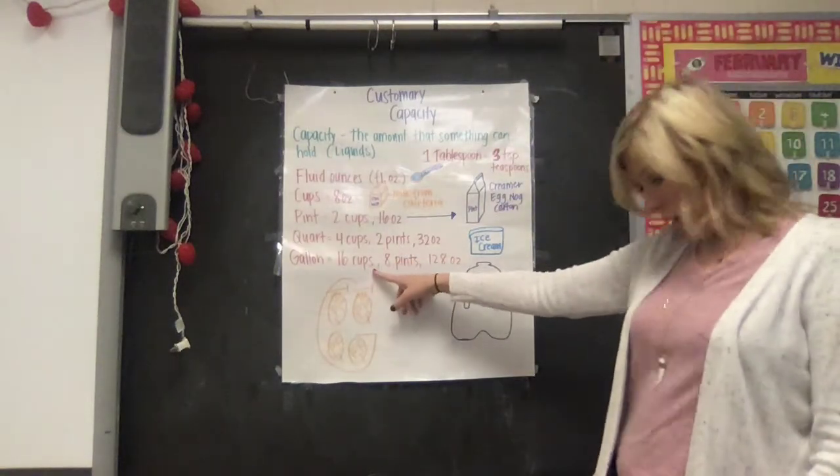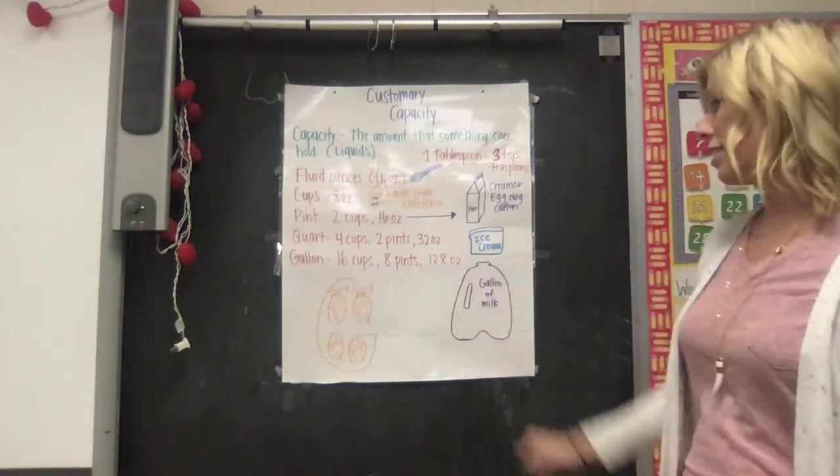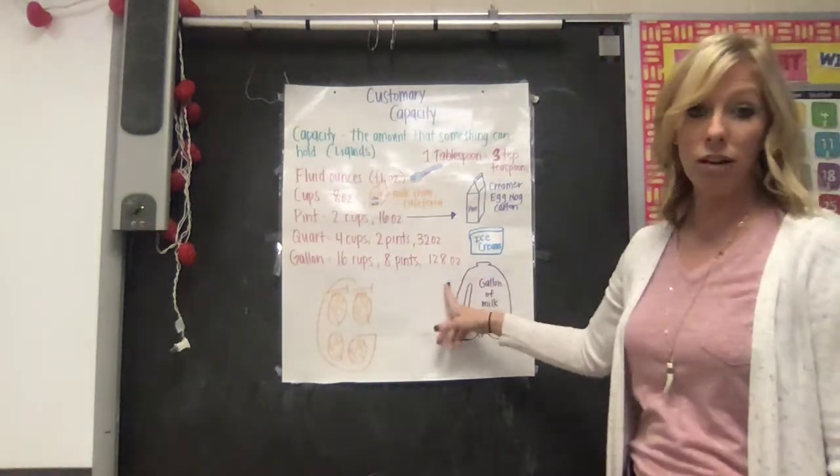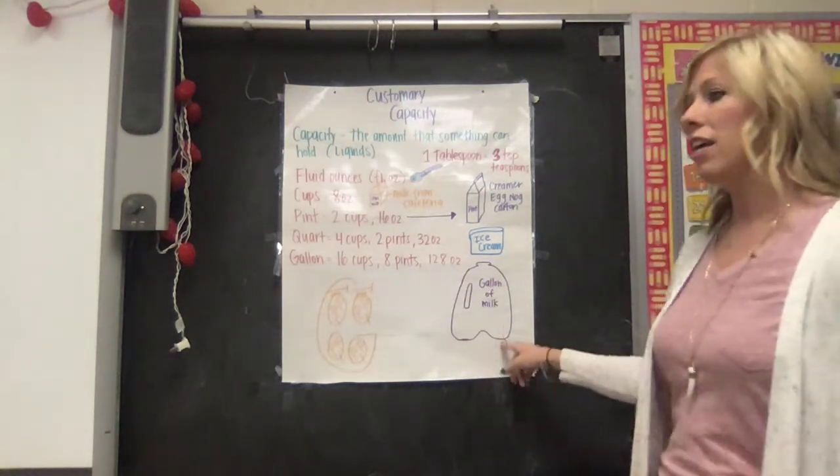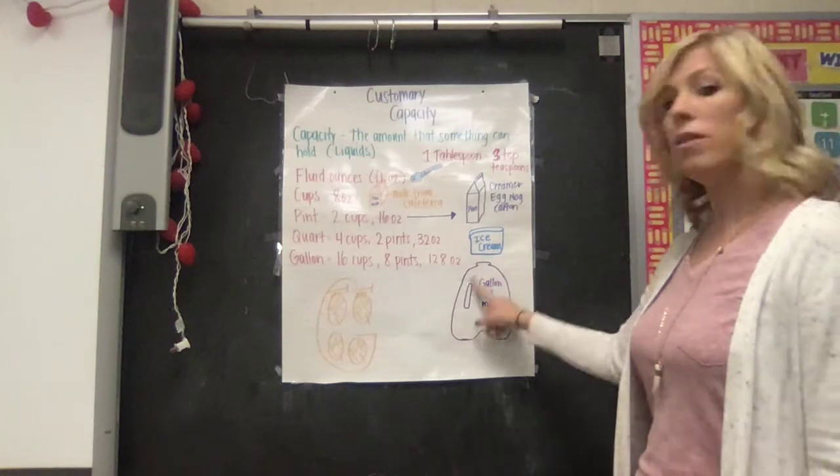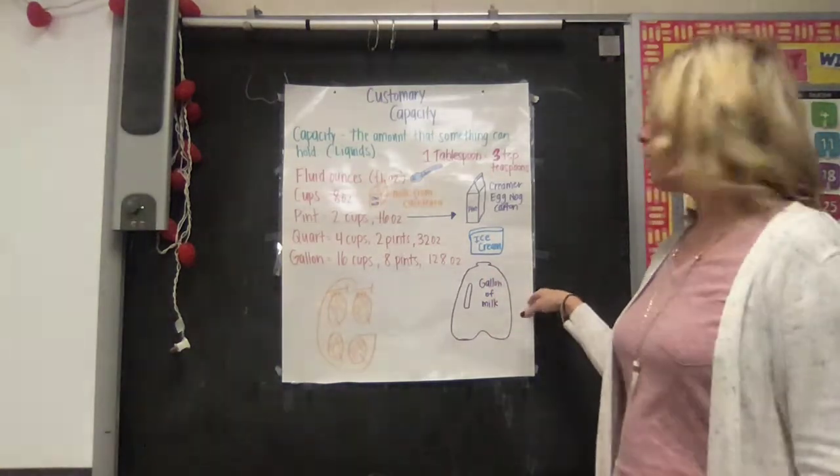And we have a gallon. A gallon has 16 cups, eight pints, and 128 ounces. Picture a gallon of milk - that's something that most of us have seen. If anybody's been here at school with me, I have that big jug of water that's about a gallon. It's not even quite a gallon.